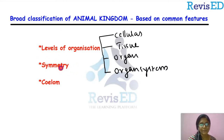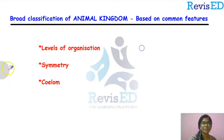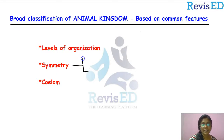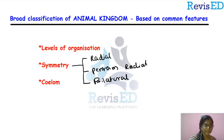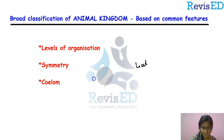The second point is symmetry. The classifications included in symmetry are radial symmetry, pentamerous radial symmetry, and bilateral symmetry. We are just refreshing all the points we have already studied.